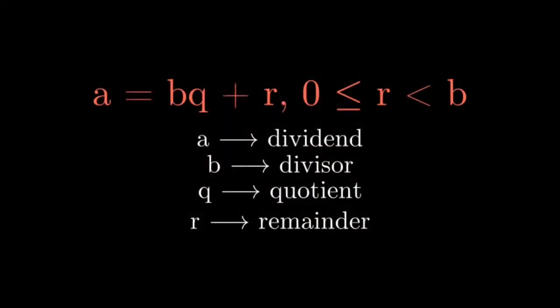Nevertheless, you gradually learnt that given two integers a and b, you can express the division algorithm as a equals bq plus r, where q and r are unique and r falls in the given range, a being the dividend, b the divisor, q the quotient, and r the remainder.